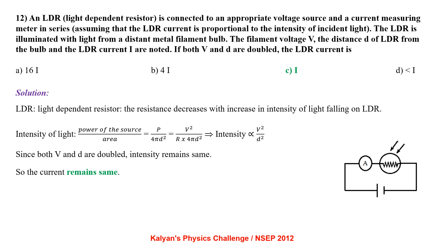An LDR (light dependent resistor) is connected to a voltage source and a current measuring meter in series. The LDR current is proportional to the intensity of incident light. The LDR is illuminated with light from a filament bulb. Intensity equals P/(4πD²) = V²/(R × 4πD²), so intensity is proportional to V²/D². Since both V and D are doubled, intensity remains the same, so the current will remain the same.